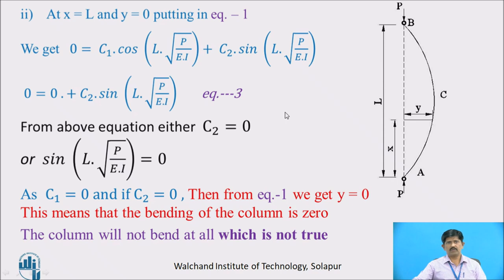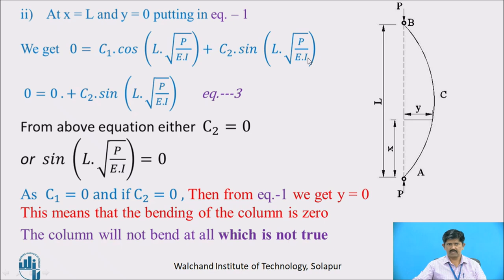Applying the second boundary condition: at x = L, at point B, deflection is again 0. Substituting into equation (1): 0 = C₁·cos(L·√(P/EI)) + C₂·sin(L·√(P/EI)). Since C₁ = 0, this term becomes 0, giving: 0 = C₂·sin(L·√(P/EI)), which is equation (3). For the left hand side to be 0, either C₂ = 0 or sin(L·√(P/EI)) = 0.